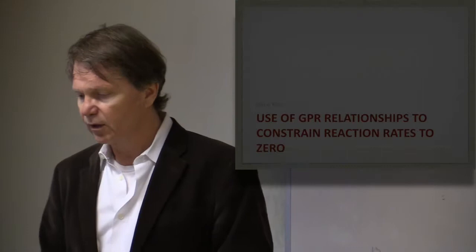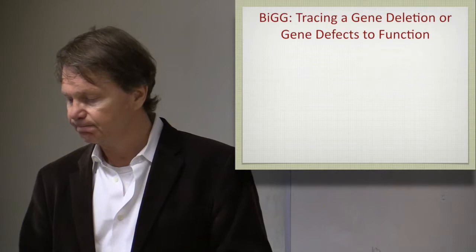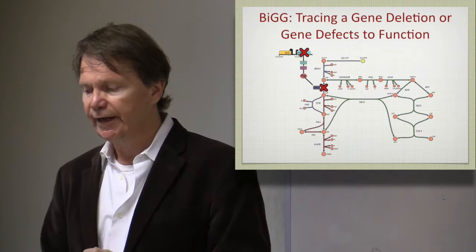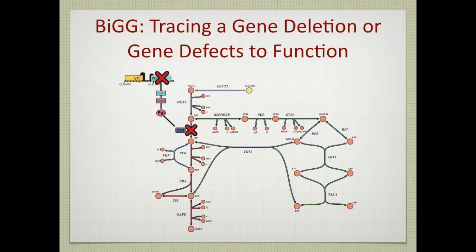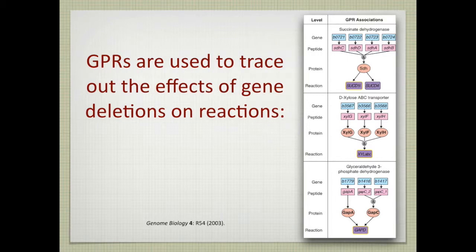Okay, so let's first then talk about how we trace the effect of gene deletion in these models. And I think this is something we showed before. If you delete the gene, you can use the genome to protein to reaction associations to tie that gene to a reaction in the network. So the gene is gone, that flux has to go to zero. So you add an additional constraint in your model. That's the concept, that's how you can do that.